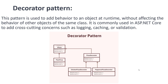The next one is the Decorator pattern. This pattern is used to add behavior to an object at runtime without affecting the behavior of other objects of the same class. It is commonly used in ASP.NET Core to add cross-cutting concerns such as logging, caching, and validations.